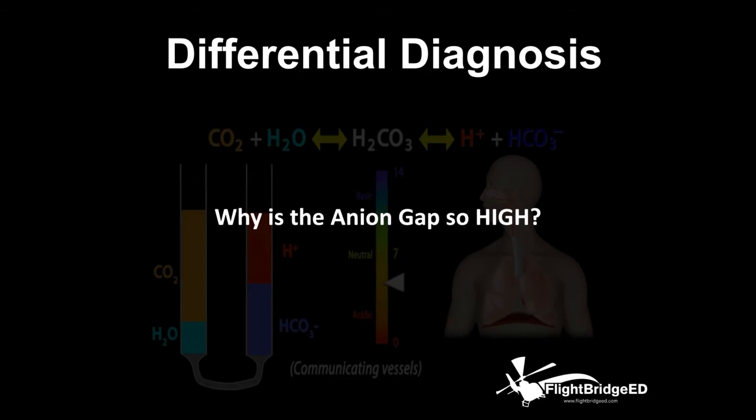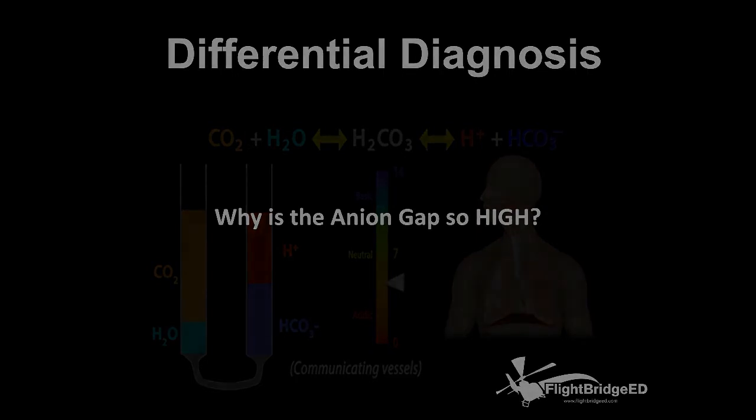Why is the anion gap so high? A corrected anion gap — meaning you're adding the potassium onto this calculation — if it's greater than 20, it's significant. We're at 30 for this patient. What does that tell us? Is that an ominous finding?